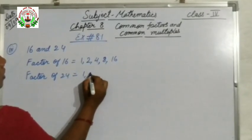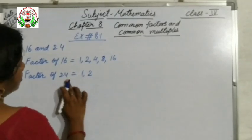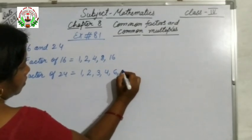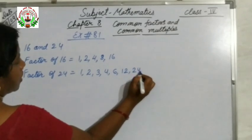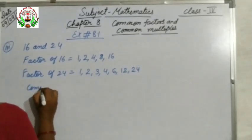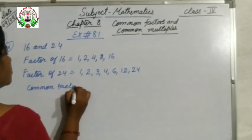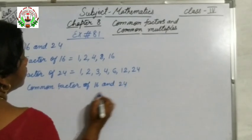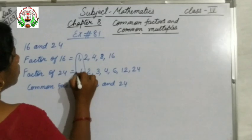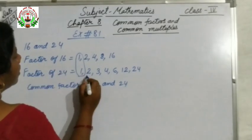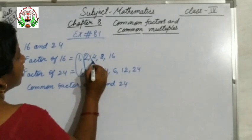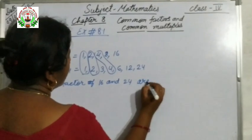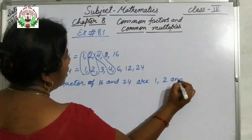Next are the factors of 24: 1, it is divisible by 2 because it is an even number, then 3 times 8 is 24, 4 times 6 is 24, 6 times 4 is 24, 12 times 2 is 24, and 24 times 1 is 24. Now we will write the common factors of 16 and 24. Which is common? 1, then 2, and 4. So the common factors of 16 and 24 are 1, 2, and 4.